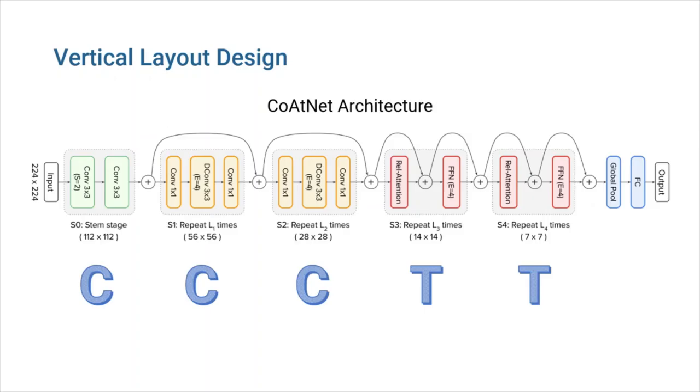Based on these results, the authors chose to use three convolutional layers followed by two relative self-attention layers. How does this model pay off in experiments?